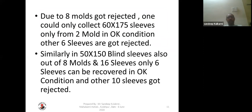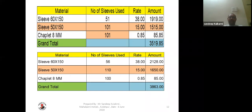Now looking at sleeves and other materials: due to 8 molds getting rejected, only 60x175 sleeves from two molds in okay condition could be collected — the other six sleeves were rejected. Similarly, for 50x150 blind sleeves, out of 8 molds only six sleeves could be recovered in okay condition, meaning almost 10 sleeves got rejected. The standard calculation shows sleeve 60x150: 51 numbers, 50x150 sleeve: 101 numbers, 8mm chaplet: 101 numbers.